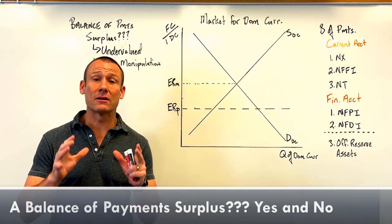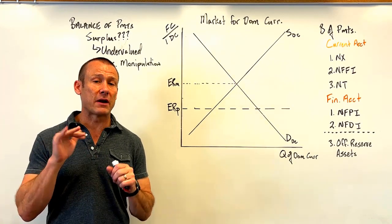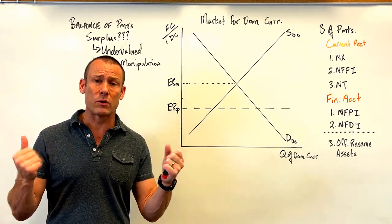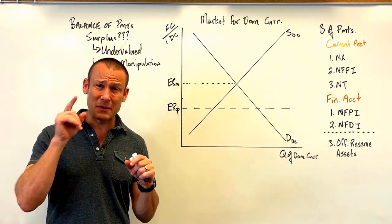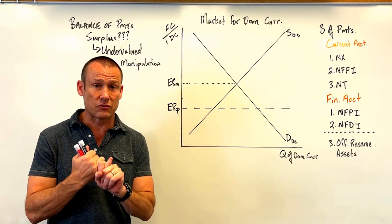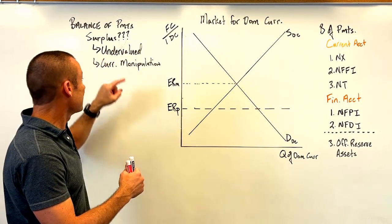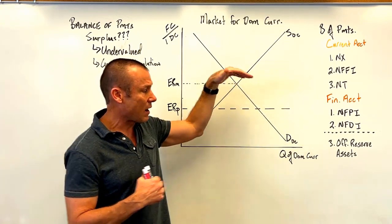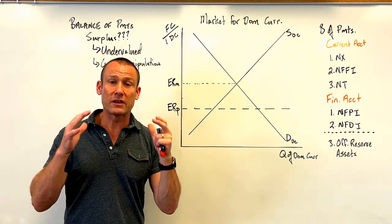Hey guys, welcome. In this video we're going to be talking about a balance of payments surplus, which is kind of a weird thing because usually the balance of payments balances. We focus a lot more in economics on balance of payments deficits because those are really problematic and they happen a lot more than balance of payments surpluses. But surpluses can happen, they do happen, and we need to study them. Studying them will give us a deeper understanding of pegged exchange rates, how the exchange market works, the concept of an undervalued currency, what we mean by currency manipulation, and how we integrate our knowledge of the exchange market with the balance of payments.